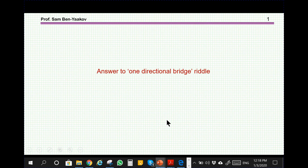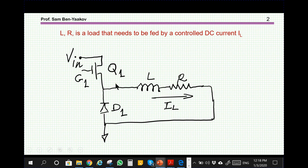Hi, I'm Sam Ben-Yakov. This presentation is an answer to a previously posted riddle on a one directional bridge. The riddle went like this: here is a load composed of an inductor plus a resistor. This is the equivalent circuit of the load, and this load has to be fed by current in one direction and has to be controlled.